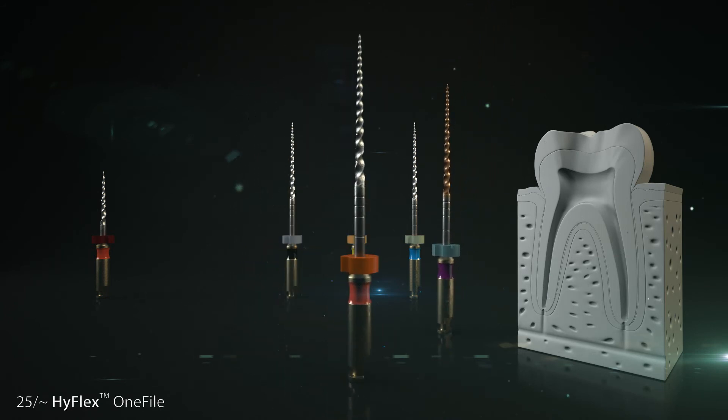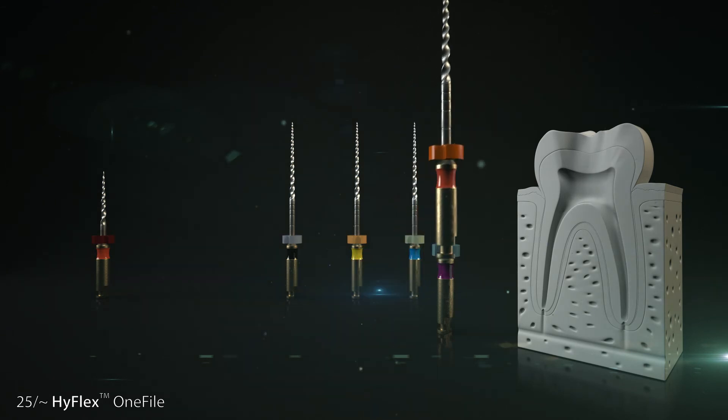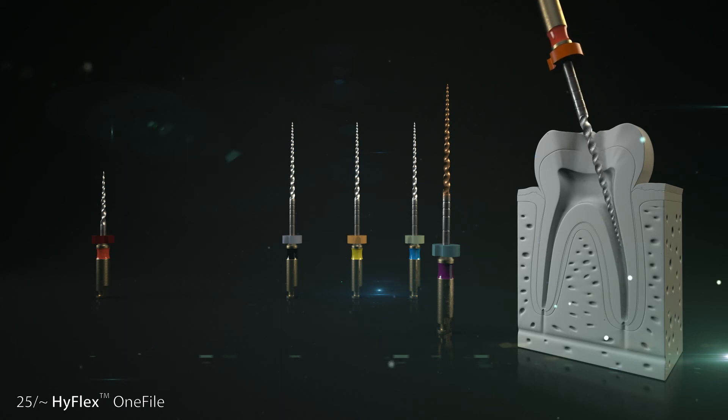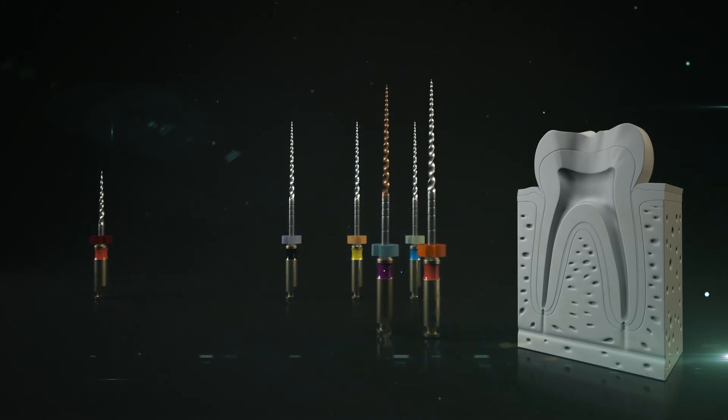Step 2: The HyFlex EDM 1 file is used for the final preparation in the middle and apical areas of the root canal. The dentist uses the file up to its working length with cautious up and down touching movements. Regular rinsing during the treatment helps to remove the dentin and generally enhances the ability of the files to glide along the canal.